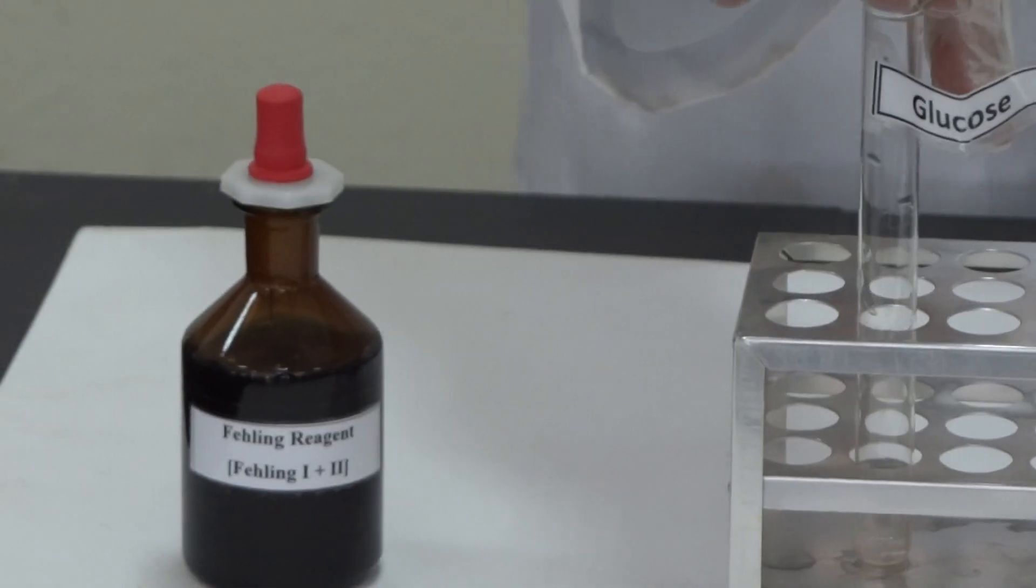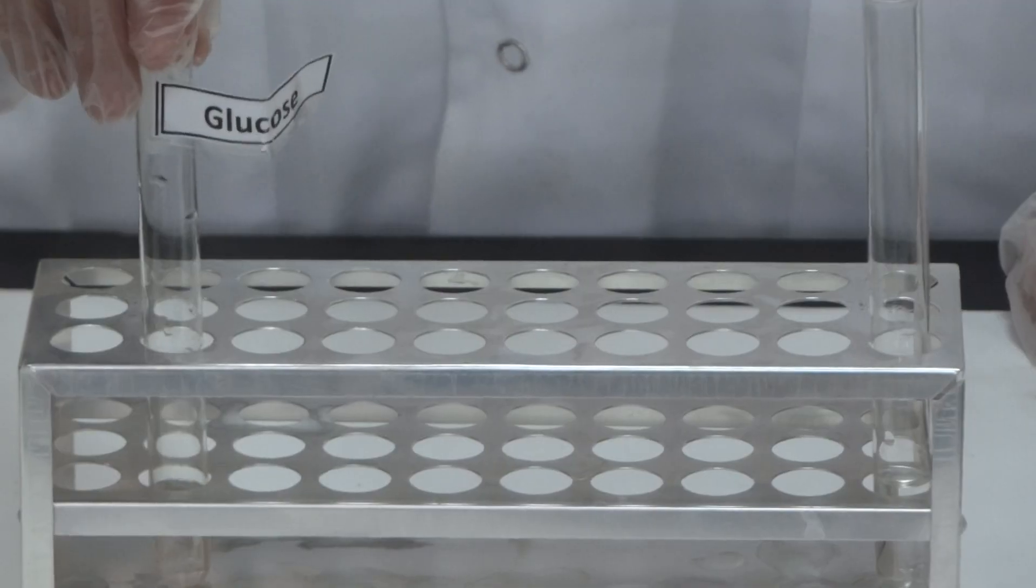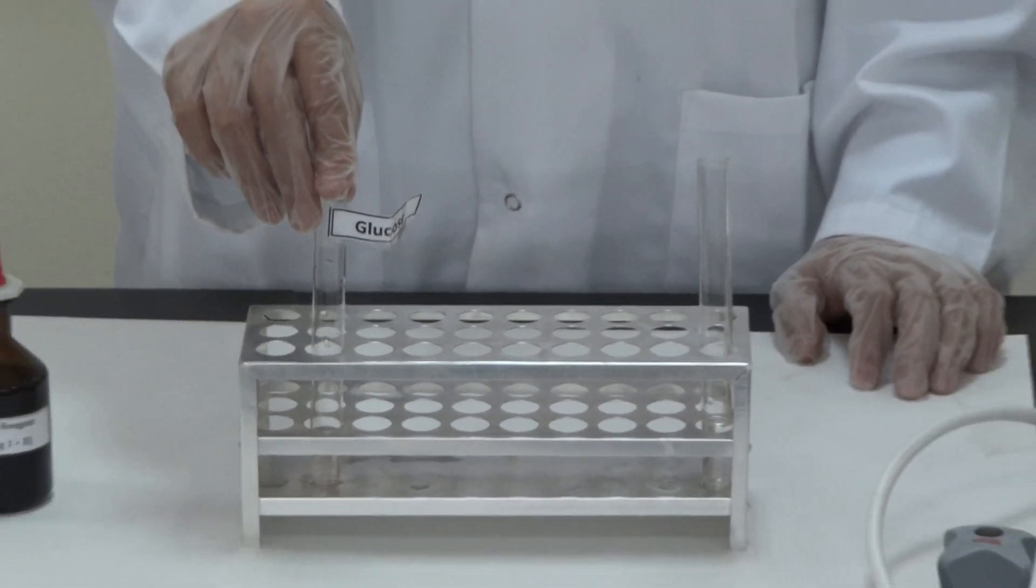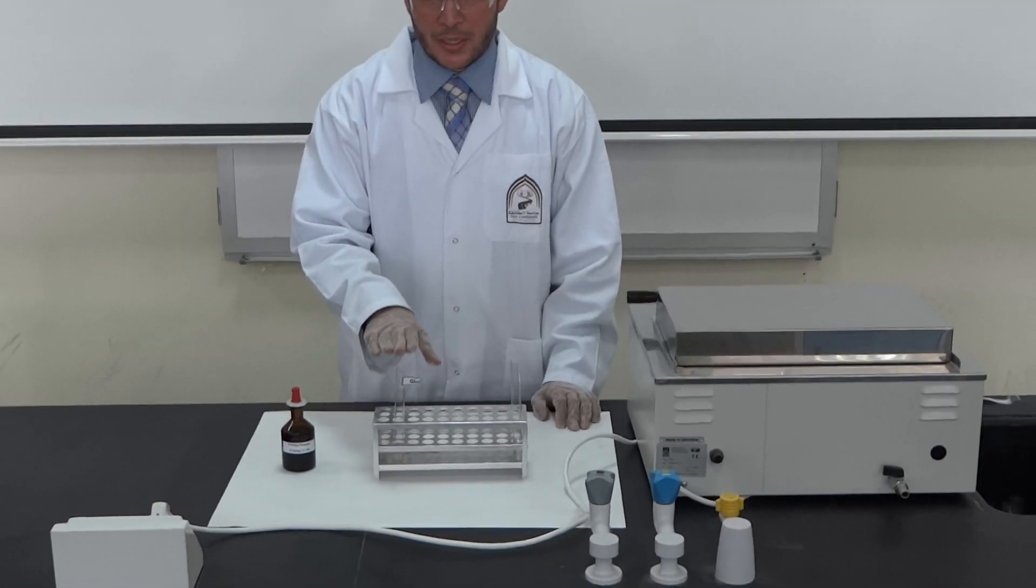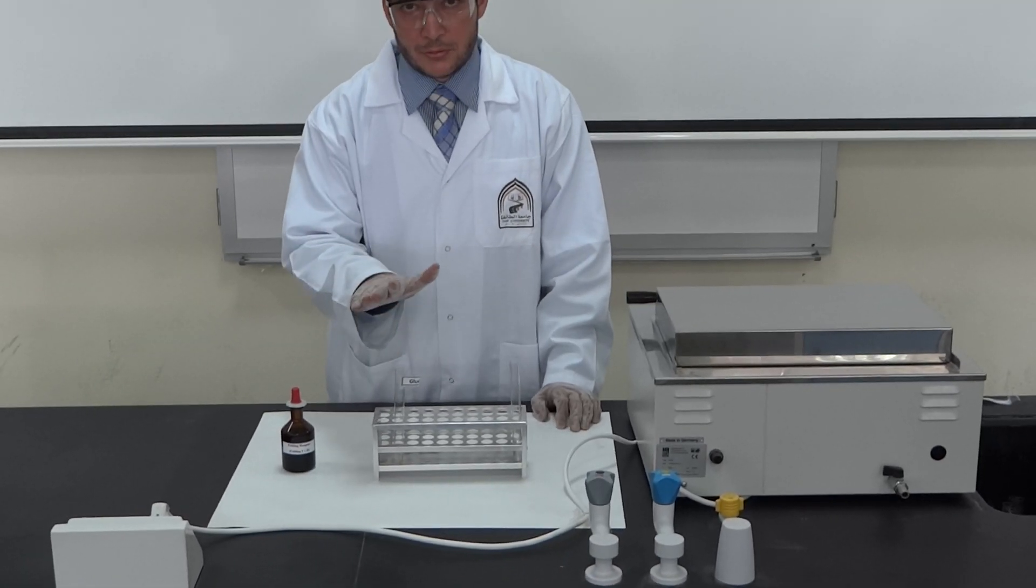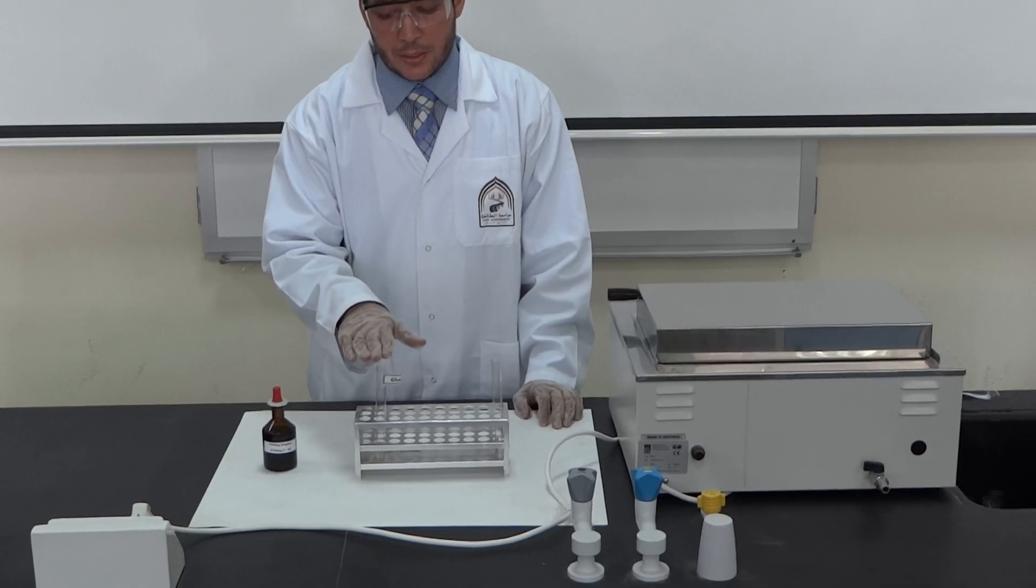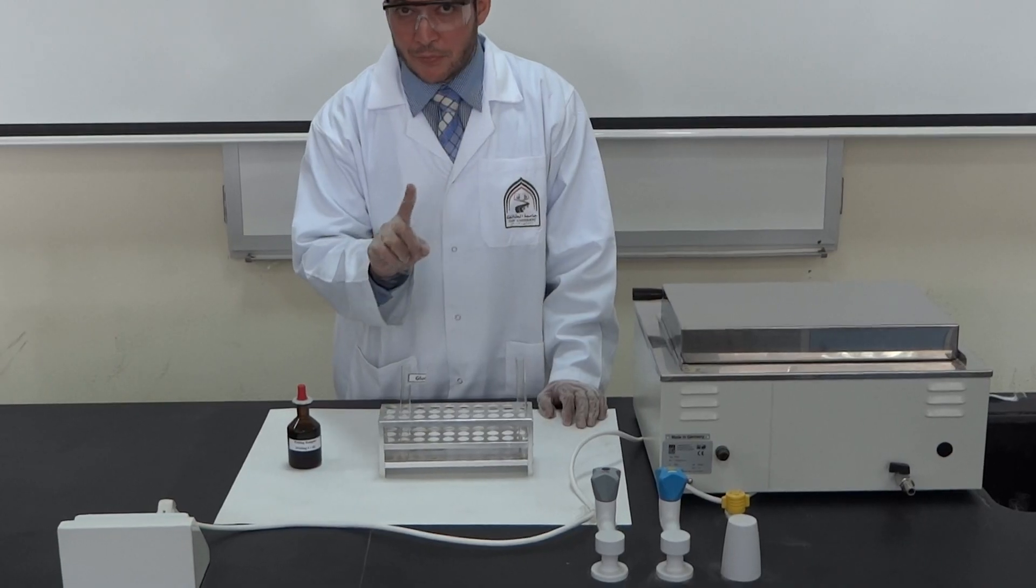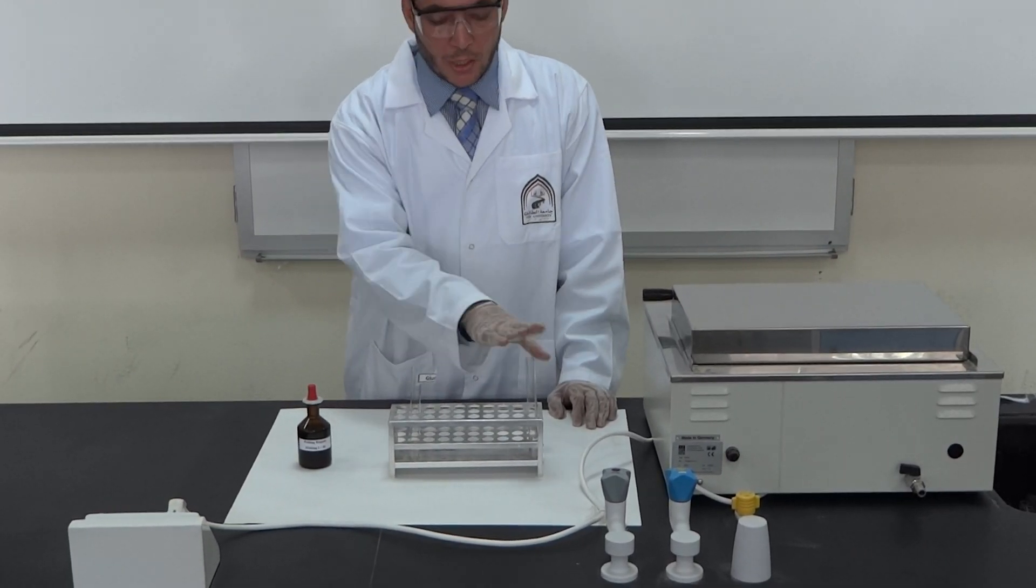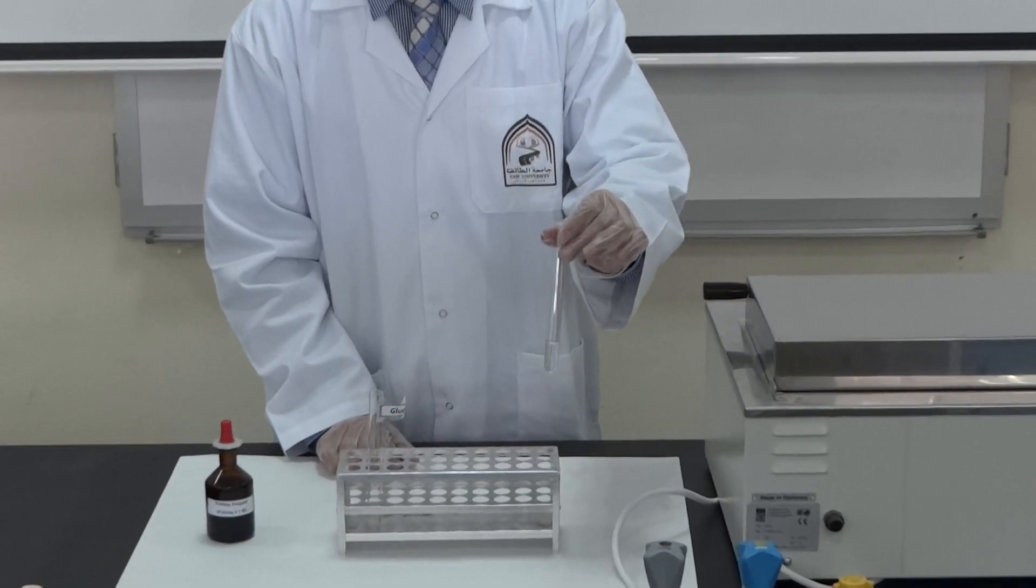As an example of reducing sugar, we have glucose, which has a free aldehyde group and is one of the family of monosaccharides. Similarly, we get the same results with glucose, fructose, and galactose as monosaccharides, lactose and maltose as disaccharides, but we won't get positive results with sucrose, although it is a disaccharide. We get negative results with sucrose or anything else.